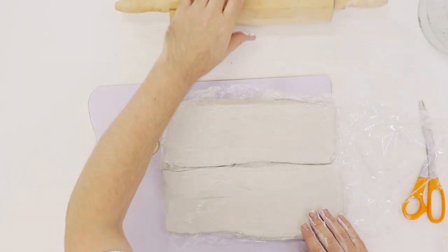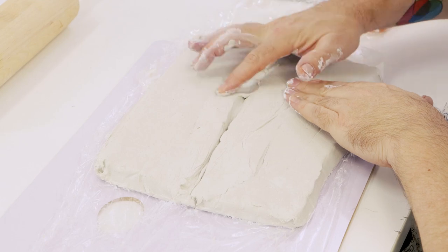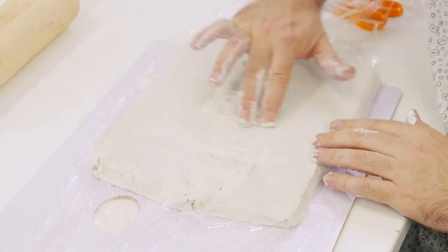Flip the clay over, move the cling film to the side and use your fingers to blend and join the two slabs of clay. Dip your fingers in some water and then smooth this side.